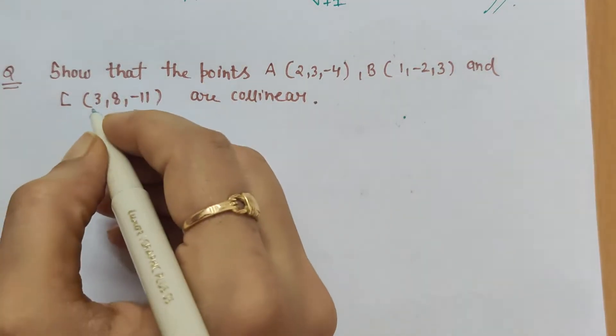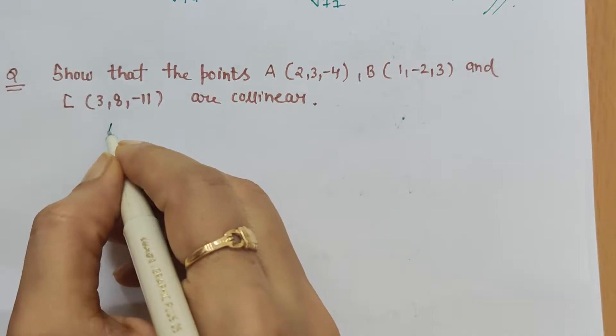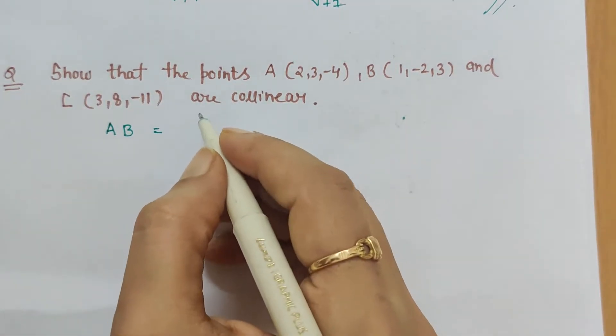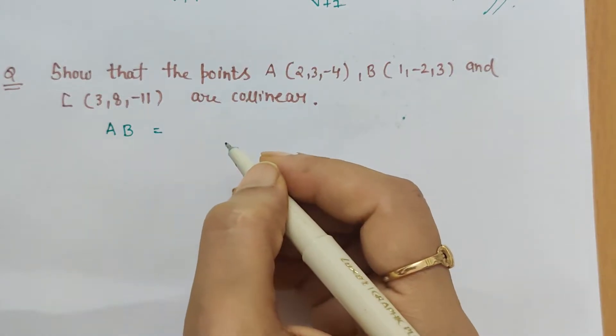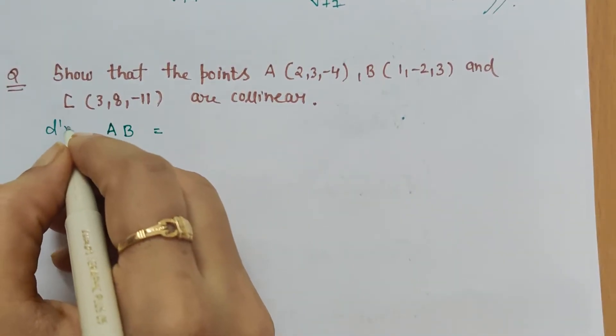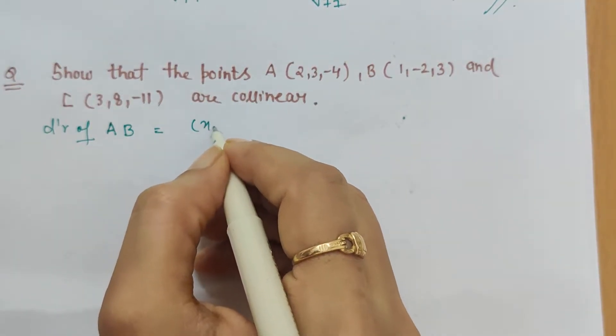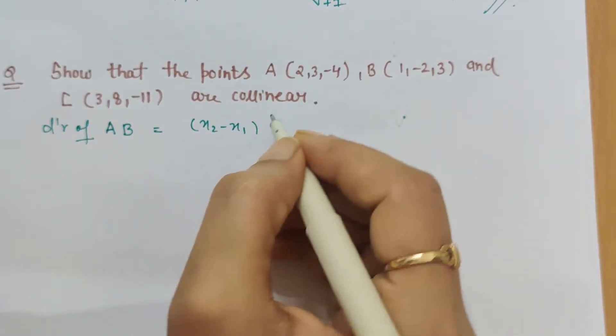...the direction ratio of the line segment joining points A and B. So direction ratio of AB would be x₂ minus x₁, then y₂ minus y₁. The direction ratio of AB is x₂ minus x₁, which is equal...